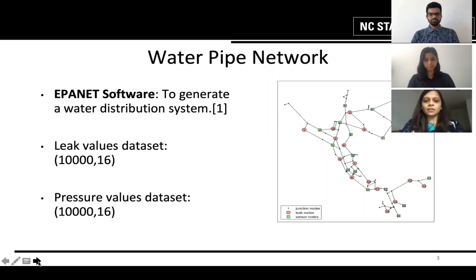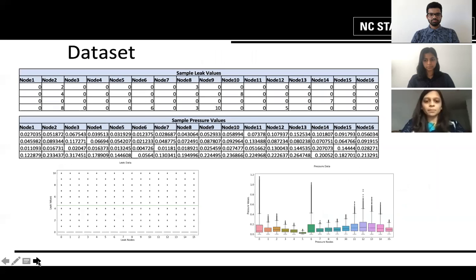The leak dataset contains leak values and response for the leaks of up to 5 with random sizes varying from 1 to 10. Similarly, the pressure values represent the pressure drop at sensor nodes due to the leakage is considered at each point.